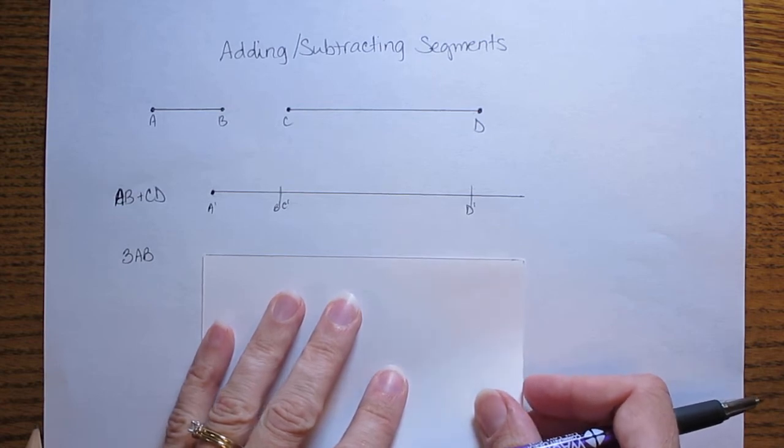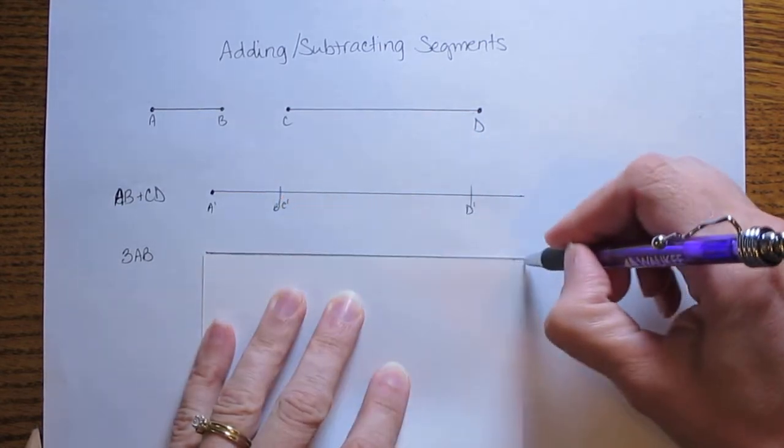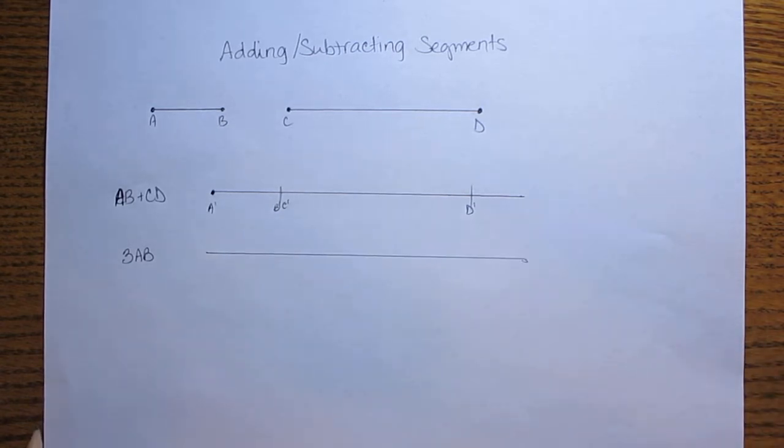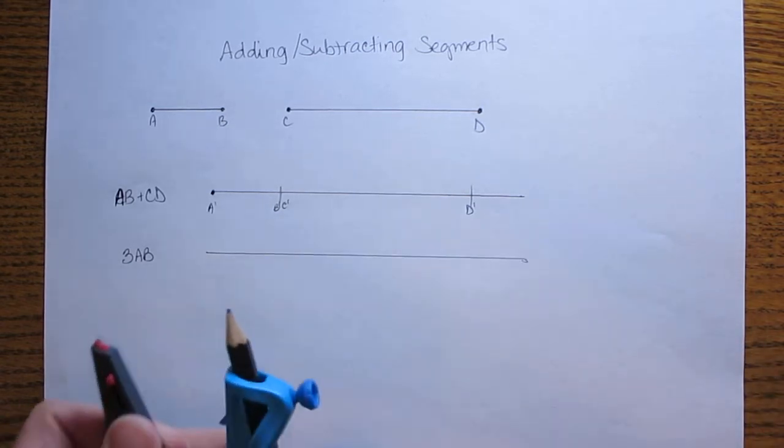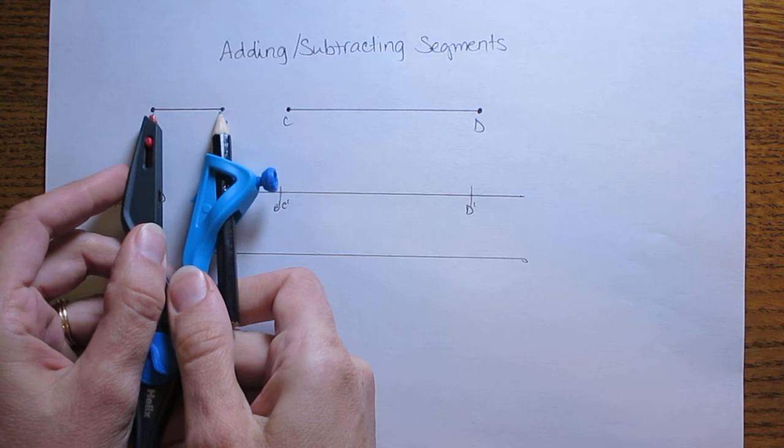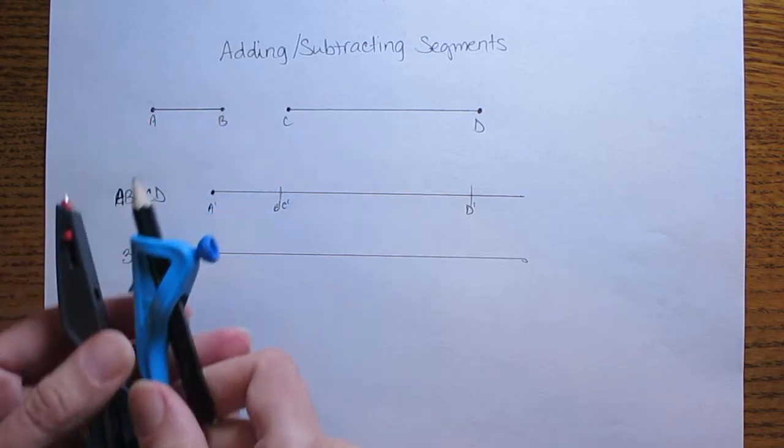We want to use our straight edge to draw a nice long line there. And we will take our compass and set our compass so that it matches the length of segment AB.